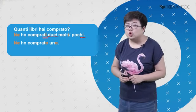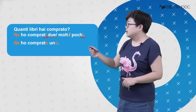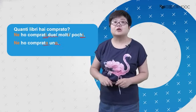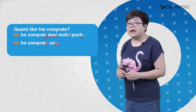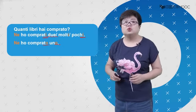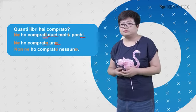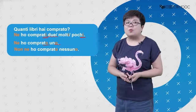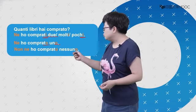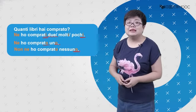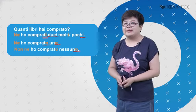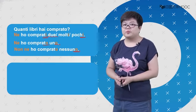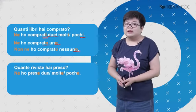如果我只买了一本，怎么办呢？Ne ho comprato uno. 因为它代替的是libro，阳性单数的概念，所以用uno。如果我连一本都没买的话，那么就得说：Non ne ho comprato nessuno. 因为是libro，所以是阳性的概念。Non ne ho comprato nessuno.